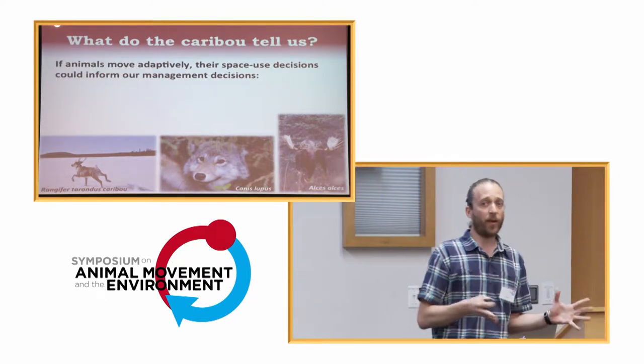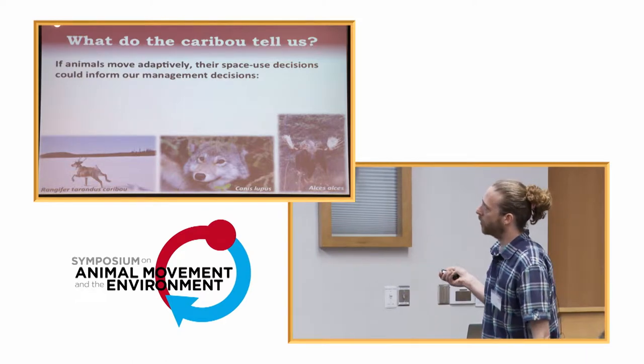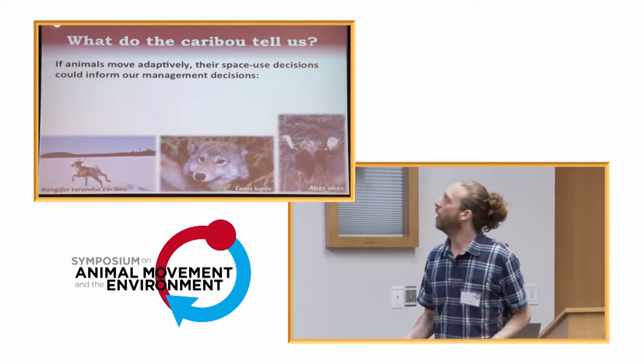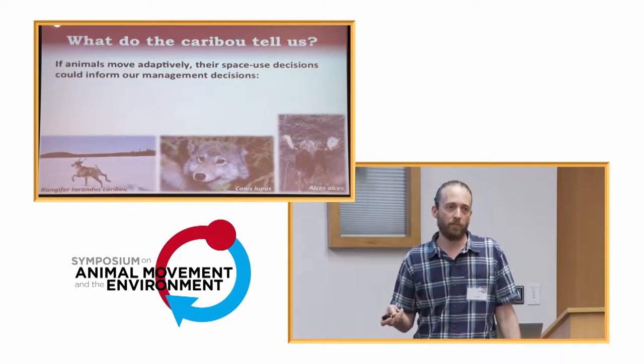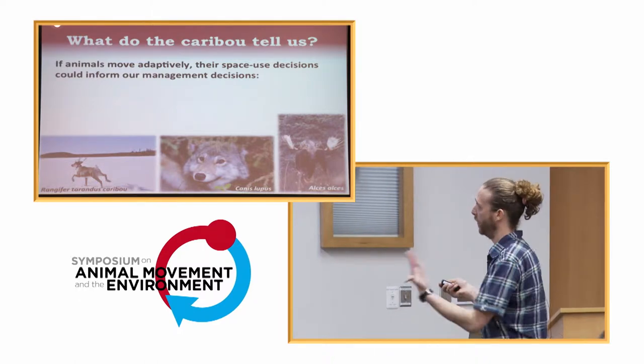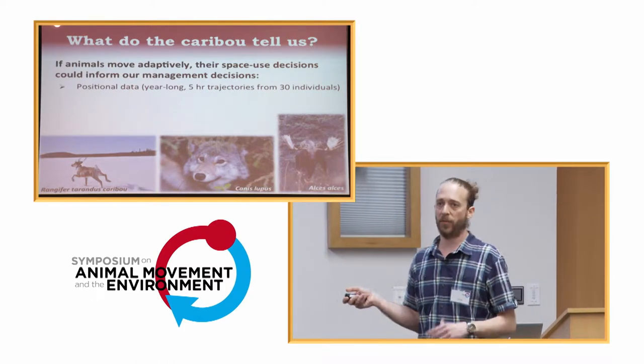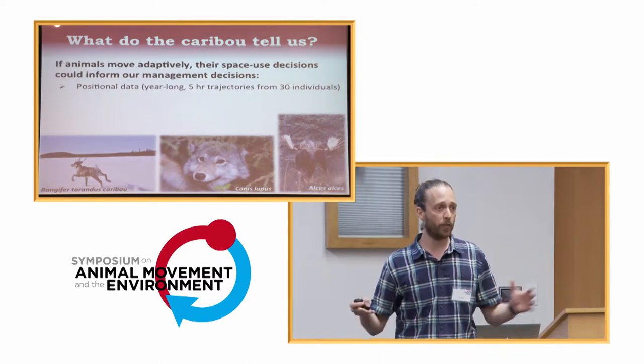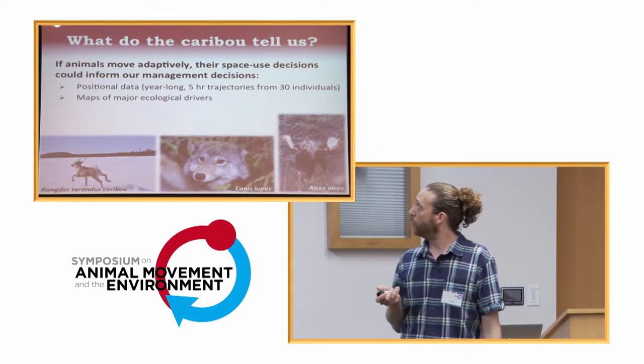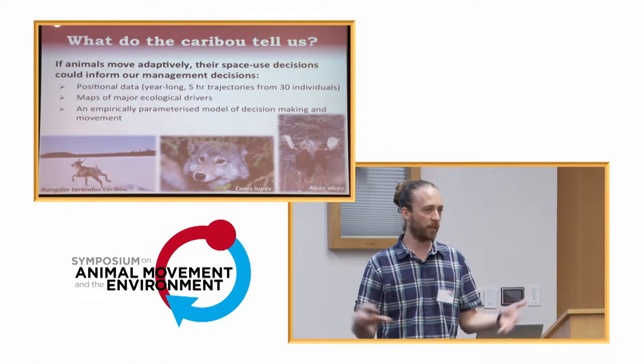So these questions are very difficult to answer. These animals live in very remote areas. We rarely observe them. They're somewhere in the forest. And one way to start dealing with these questions is asking what do the animals do at the behavioral level. And if those animals move adaptively and they make adaptive decisions, then those decisions might inform us what's important for them at the fitness level, at the demographic level. And to do that, we need several important components. We need positional data, good quality positional data. In this case, I'm going to talk about 30 different individuals at yearly trajectory at five-hour resolution, GPS data. We need maps of major ecological drivers that might influence the decision-making and space use. And we need a model that we can plug these into and get some inference from.